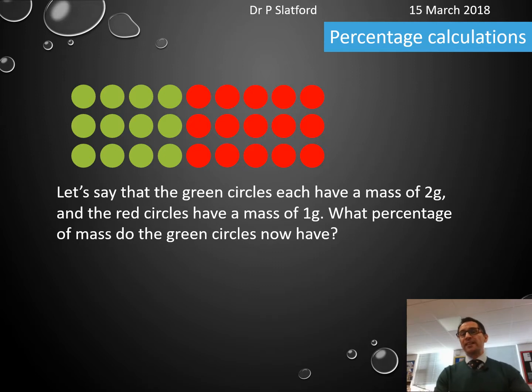But let's say each green circle has a mass of 2 grams and the red circles have a mass of 1 gram. What is the percentage of mass that the green circles now have out of the total?